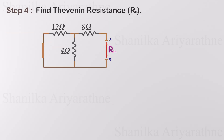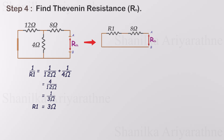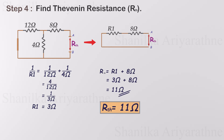To calculate the resistance, we combine the resistors in series or parallel as needed. In this case, the 4 ohm and 12 ohm resistors are connected in parallel. By solving for their equivalent resistance, we simplify the circuit. We calculate the total resistance of the parallel connected resistors: R1 equals 3 ohms. Next, R1 is in series with the 8 ohm resistor. Adding them gives a total resistance of 11 ohms. This is the Thevenin resistance of our circuit.